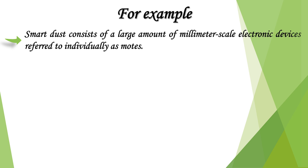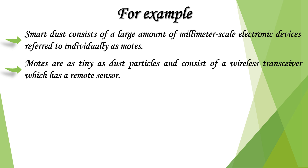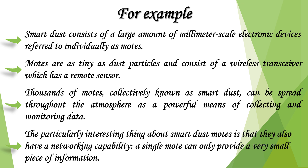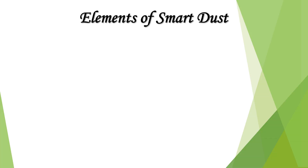Smart dust consists of a large amount of millimeter-scale electronic devices referred to individually as motes. Motes are as tiny as dust particles and consist of a wireless transceiver with a remote sensor. Thousands of motes, collectively known as smart dust, can be spread throughout the atmosphere as a powerful means of collecting and monitoring data. The particularly interesting thing about smart dust motes is that they also have a networking capability — a single mote can only provide a very small piece of information.